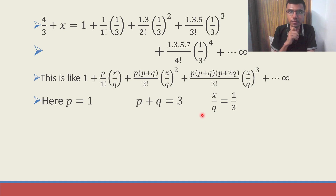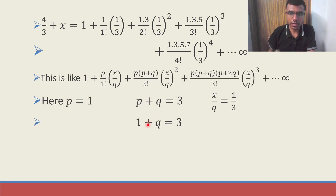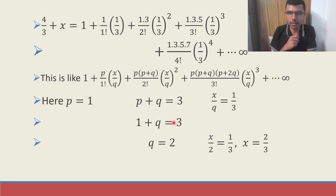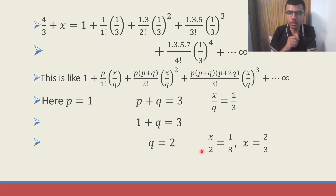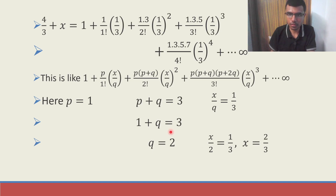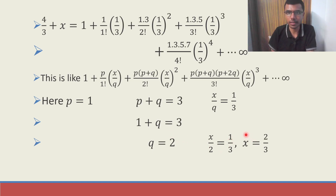So putting those values: P is 1, and 1 + Q = 3, so Q = 2. X/Q = 1/3 and Q = 2, so X/2 = 1/3. Sending the 2 to the other side, X is nothing but 2/3.